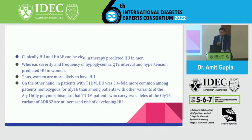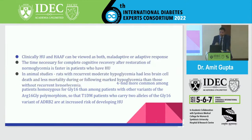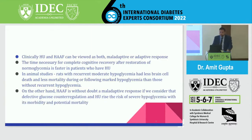HU can be regarded as both maladaptive and adaptive. It is adaptive because when glucose levels fall, the brain tries to remain energetic and protect the individual. It is maladaptive because warning signs are absent, and the patient can land in immediate emergency. Evidence shows that those with HU take less time for complete cognitive recovery after restoration of normal glycemia. Animal studies also show recurrent moderate hypoglycemia leads to less brain cell death and less mortality during marked hypoglycemia.